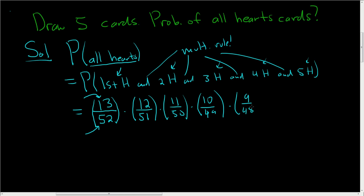What's the next one? No, I'm kidding. There is no next one. You stop because you have five cards. This equals, rounding, 0.000495. So very unlikely that if you draw five cards, you will draw five hearts cards.